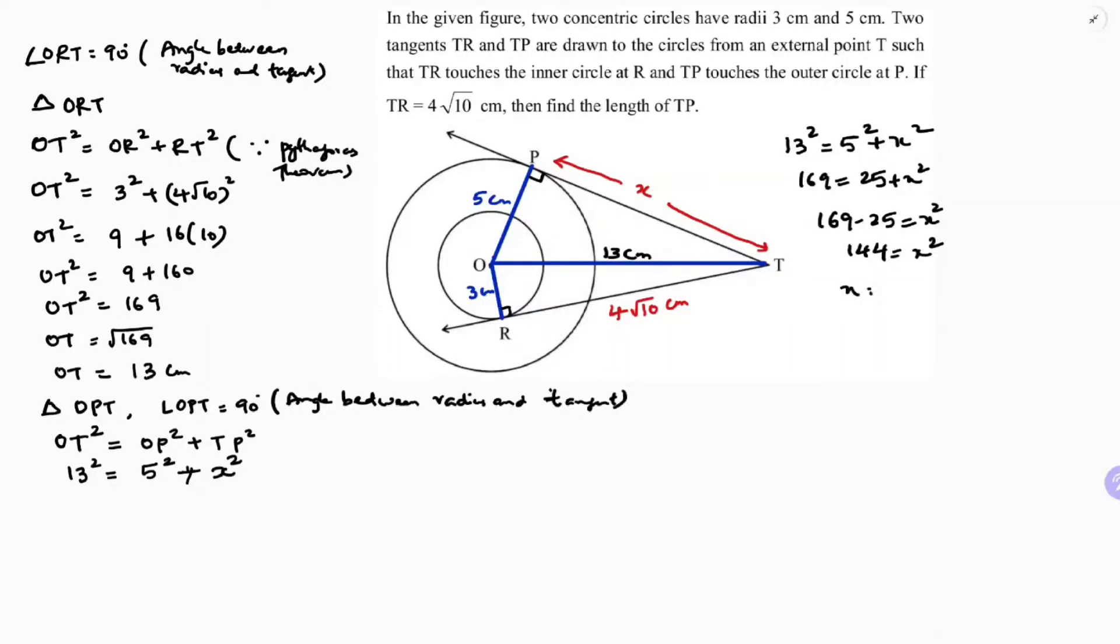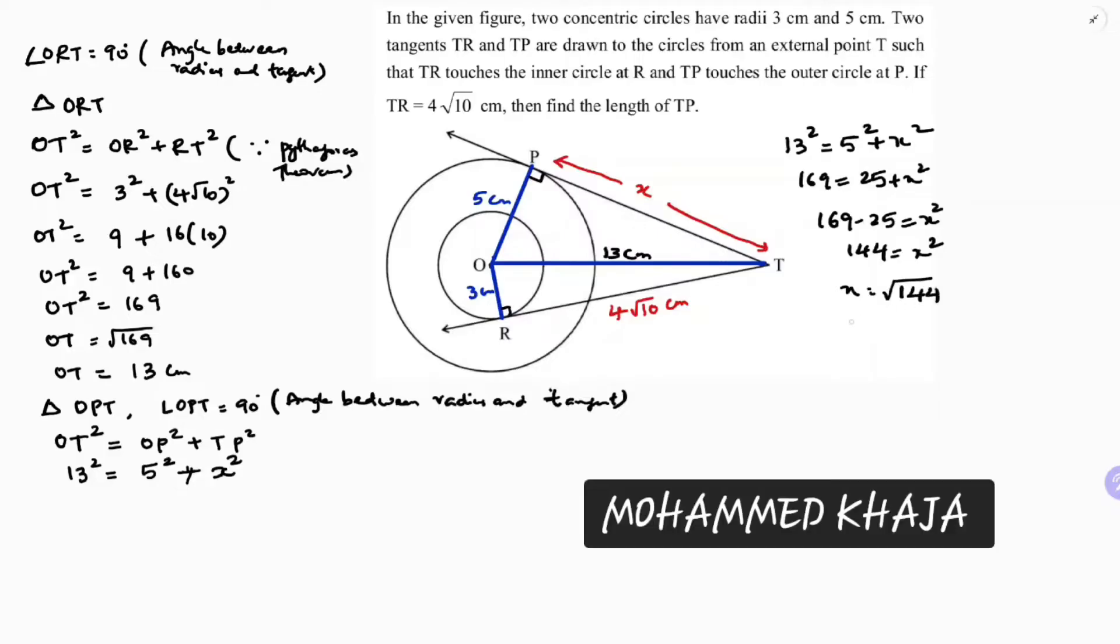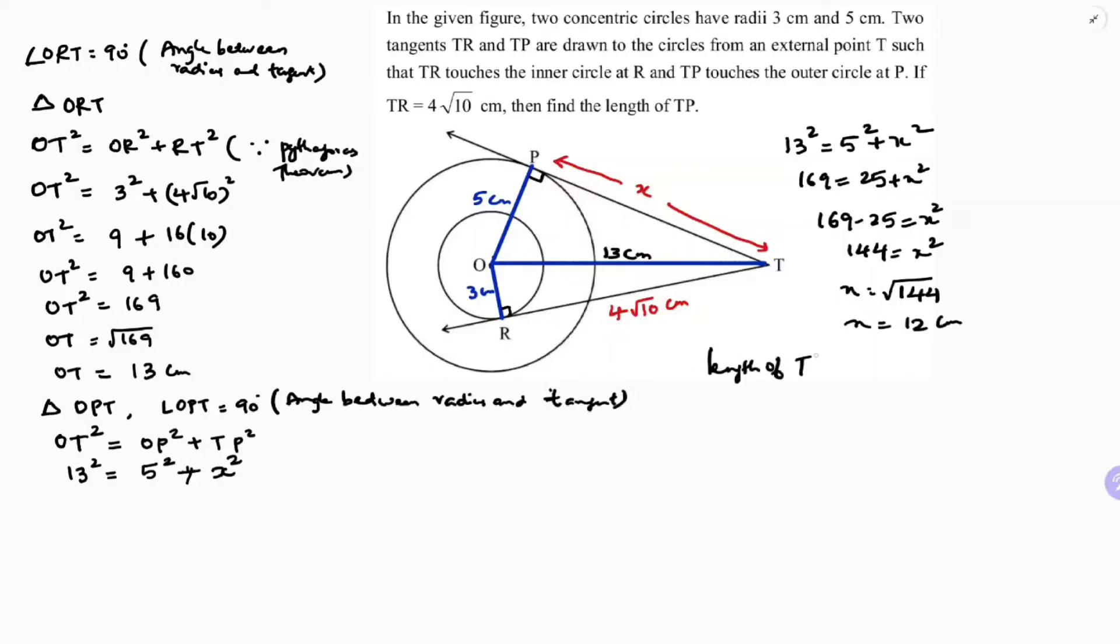So x = √144. So the value of x is 12 cm. So length of TP is 12 cm.